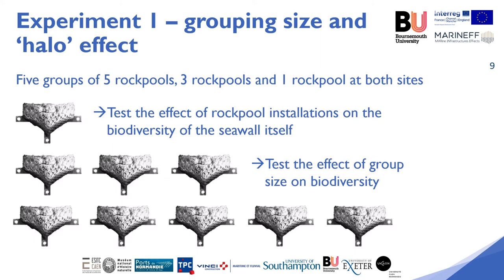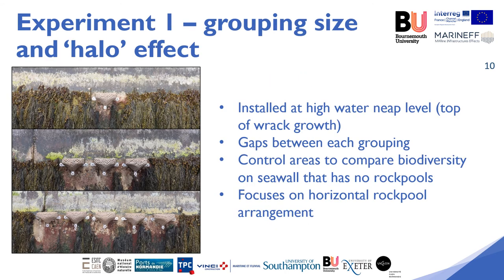Experiment 1 will take place in Poole Harbour in Dorset and near Yarmouth on the Isle of Wight. Each site will host 45 rock pools with three different arrangements: one rock pool, three rock pools and five rock pools. The aim of this experiment is to see how the number of rock pools within a cluster may affect biodiversity, particularly when looking at the surrounding seawall, dubbed the halo effect. Through this, we will be able to advise coastal practitioners how these features can be best installed to maximise their ecological value. All the rock pools in this experiment are installed at high water neap level, with gaps between each cluster to prevent overlap. There are also control areas where no rock pools are installed to compare the biodiversity of seawalls with and without the rock pool enhancement.